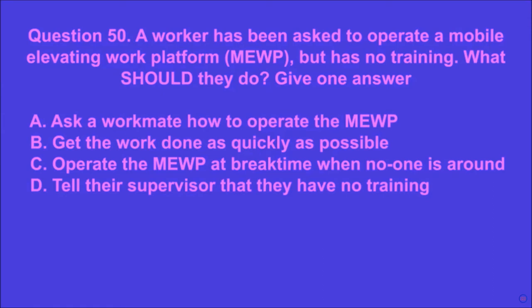Question 50: A worker has been asked to operate a mobile elevating work platform (MEWP) but has no training. What should they do? Give one answer. A: ask a workmate how to operate the MEWP, B: get the work done as quickly as possible, C: operate the MEWP at break time when no one is around, D: tell their supervisor that they have no training. D is the correct answer.